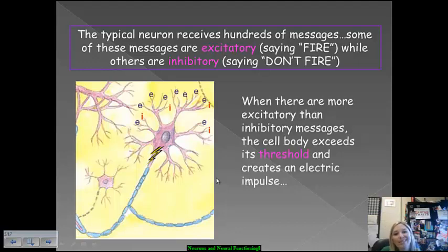There are more excitatory messages being sent to the neurons than inhibitory. This is when you have a scenario where the cell body has reached its threshold and exceeded it. It's met its daily intake, so to speak, of messages. So, once it's gone over that threshold, there is an electric pulse, and this is when the neuron is going to be able to fire.